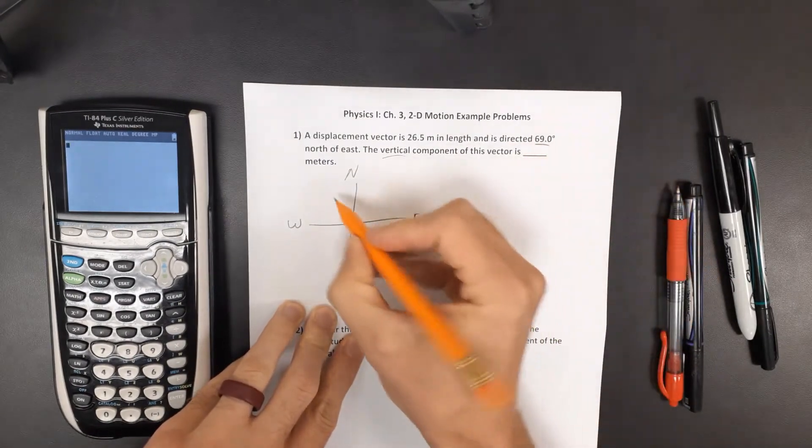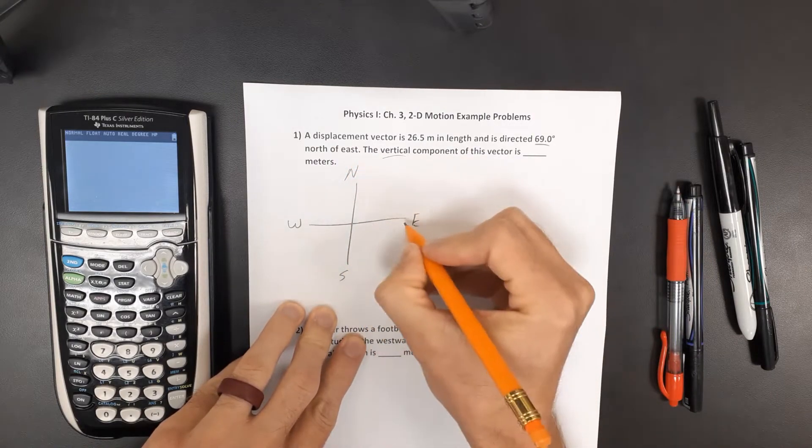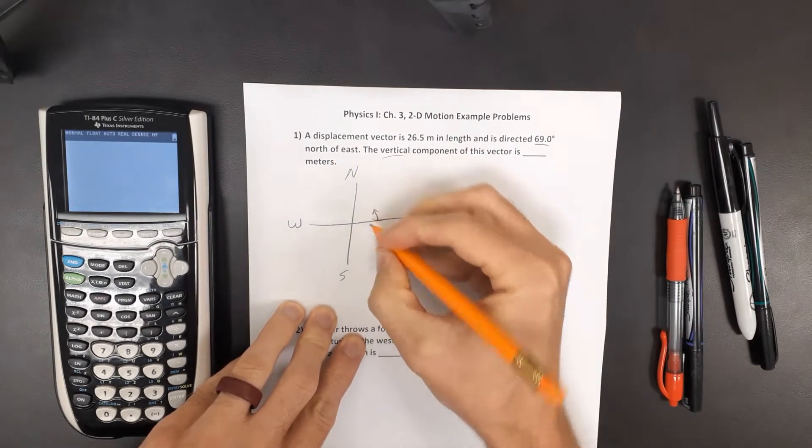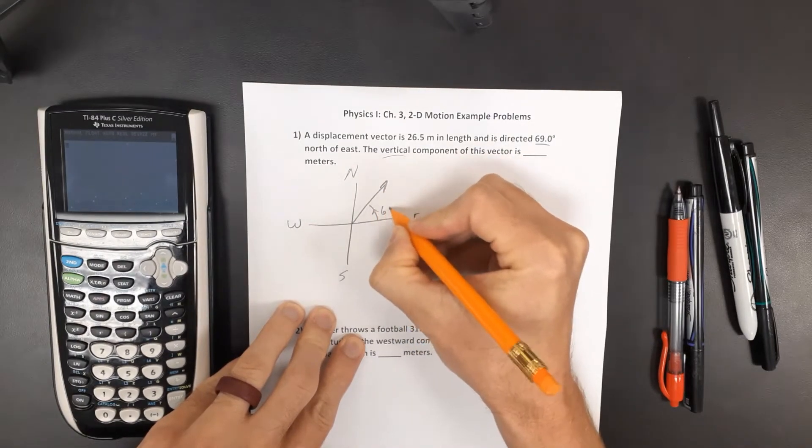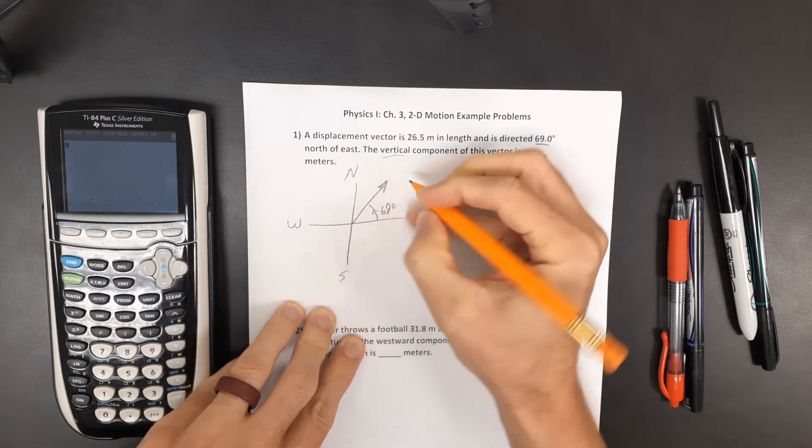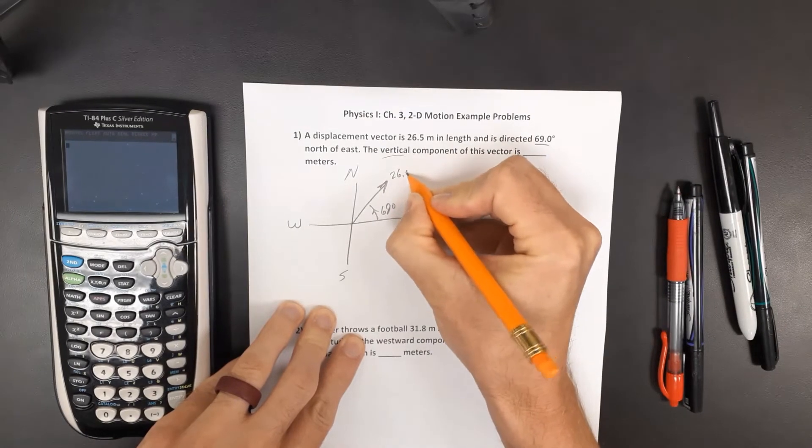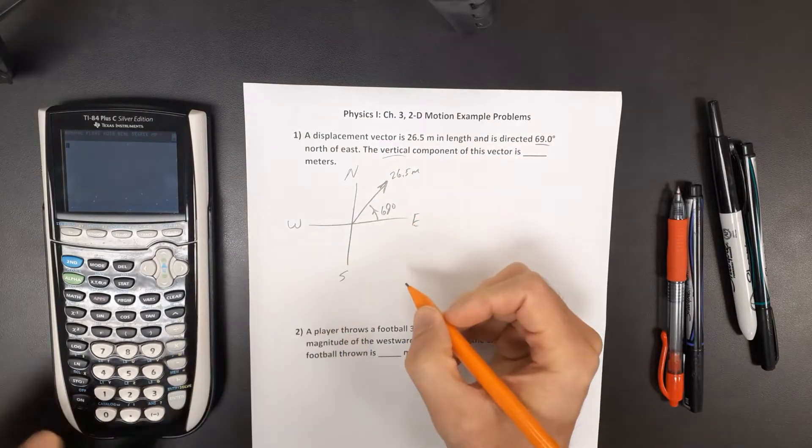And here we're 69 degrees north of east, so going in this direction, we're somewhere along here. It's 69 degrees with a 26.5 meter length.